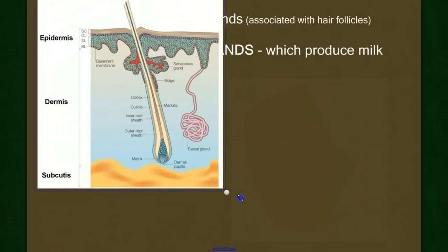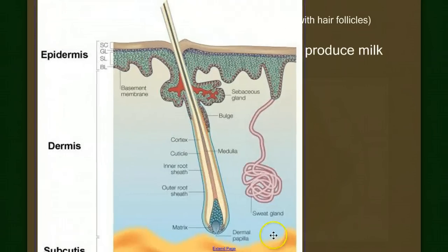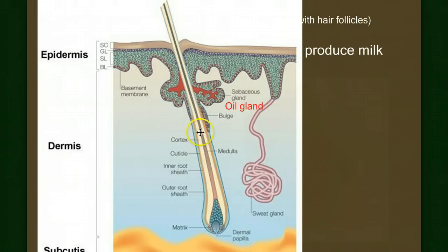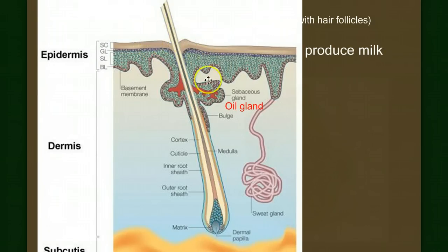If we zoom into this diagram, we can see a hair follicle, and associated with that follicle is a sebaceous gland that produces oil. That oil lubricates the hair as it moves out, and it covers the hair and the skin, providing waterproofing — because oils are lipids, and lipids repel water.